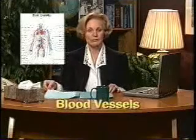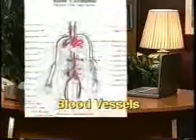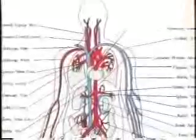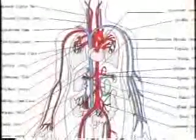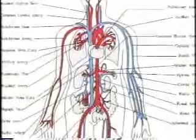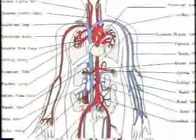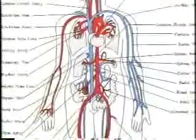Blood carries oxygen and nutrients to the cells of the body and carries away from those cells carbon dioxide and other waste products. The blood is distributed through the body by way of blood vessels. Blood vessels that carry oxygenated blood away from the heart are called arteries. Oxygenated blood is blood that has oxygen added to it. As these blood vessels branch out, they become smaller and smaller until they are so thin that they are called capillaries.